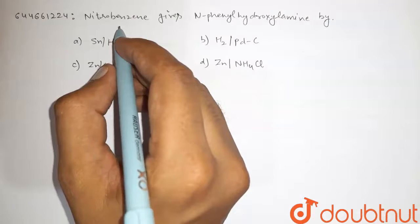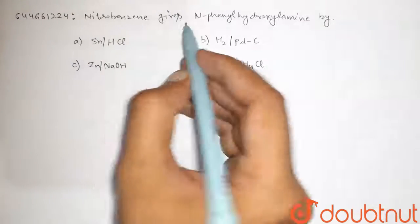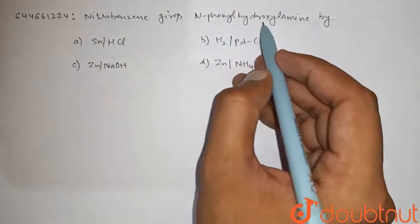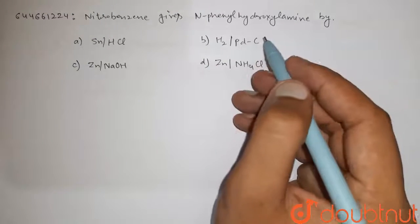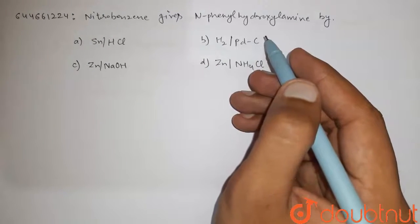Hi guys, here is the question. Nitrobenzene gives n-phenyl hydroxylamine by—four options are given. We have to choose the correct option.